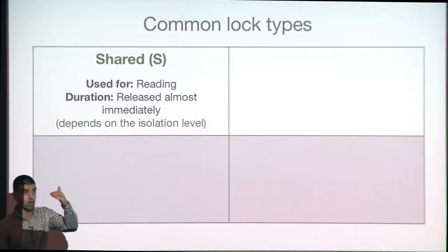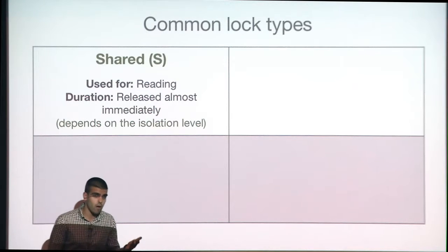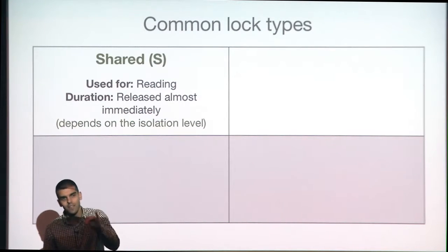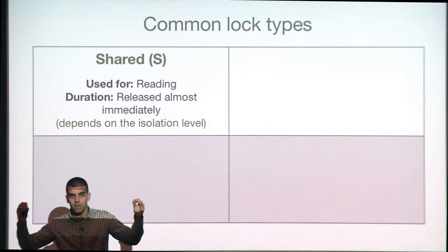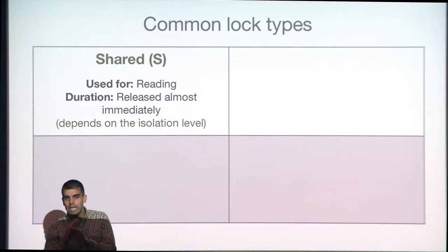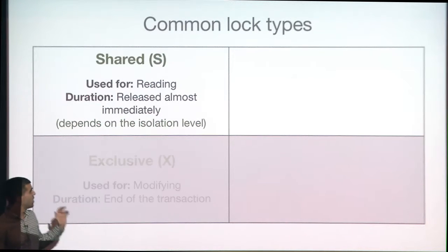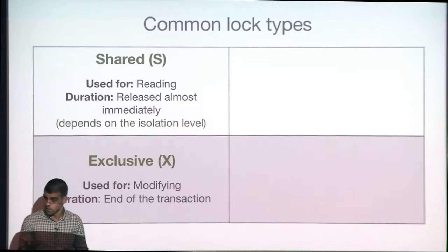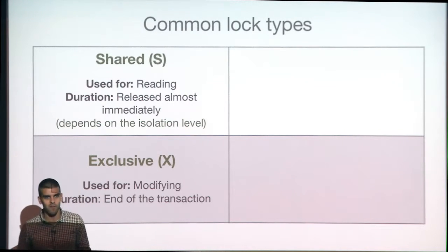By default that's the behavior, but it changes completely when you switch to a different isolation level. There's another type of lock called exclusive — placed when we need to modify a record or object. The exclusive lock is held to the end of the transaction.